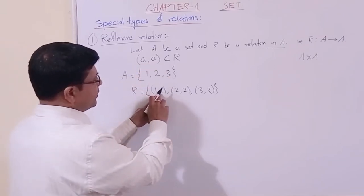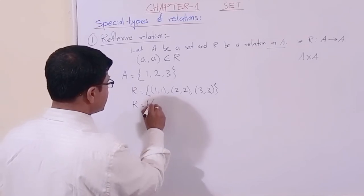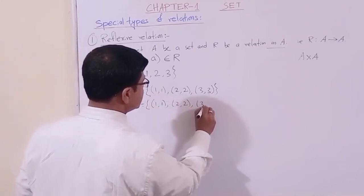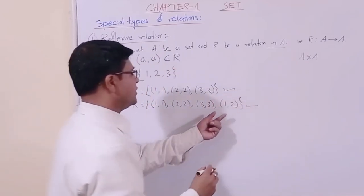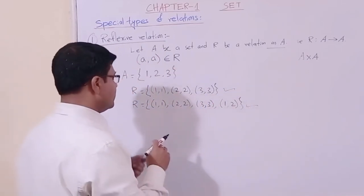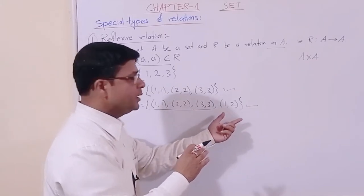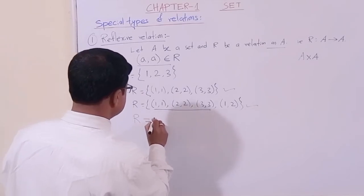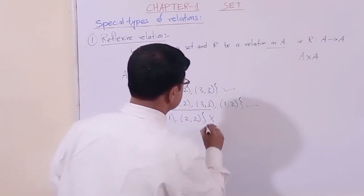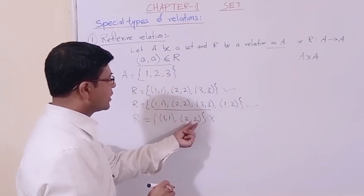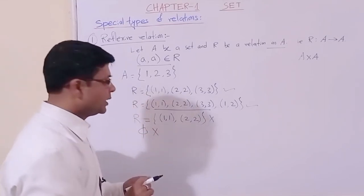The same component — (1,1), (2,2), (3,3) — must be present. Even if there are extra elements beyond these doublets, it is still a reflexive relation. However, if for example (3,3) is missing, then it is not reflexive. Also, the null relation is never a reflexive relation.